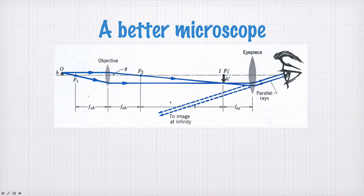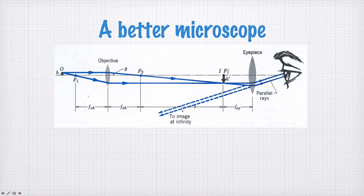There are a few different distances defined here. We have f_ob, the focal length of the objective. The object distance is slightly beyond this focal point to give you a real image. The distance between this focal point and the focal point of the eyepiece is called s, and this is the tube length of the microscope — how long a tube you have. By choosing the focal length of the objective, the eyepiece, and this distance s, you can achieve a wide range of possible magnifications.